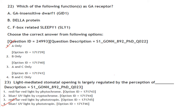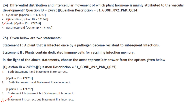Which of the following functions as a GA receptor? GA-insensitive dwarf 1 (GID1) — A only — functions as a gibberellic acid receptor. Light-mediated stomatal opening is largely regulated by the perception of blue or UV light by phototropin. Answer is option 4. Differential distribution and intercellular movement of auxin is mainly attributed to vascular development. Answer is option 3.